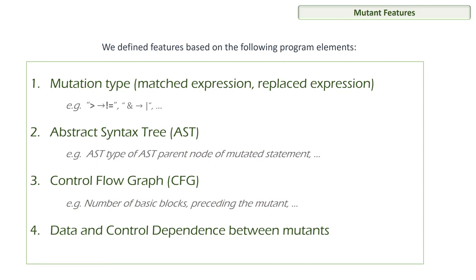For evaluation, we use Codeflaws, a benchmark of programs that have faults. We use around 1,629 faulty programs, which created more than 1 million mutants, and we have around 100,000 tests. We use cross-validation to evaluate our machine learning selection.